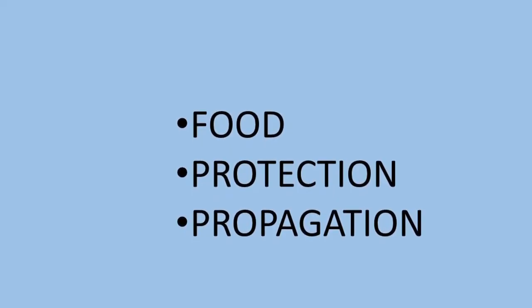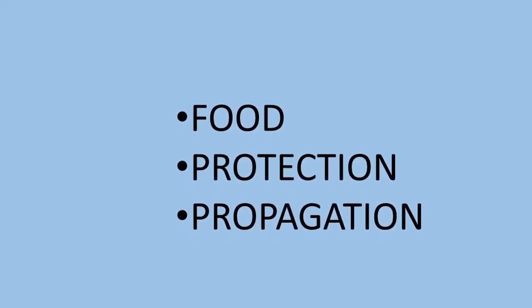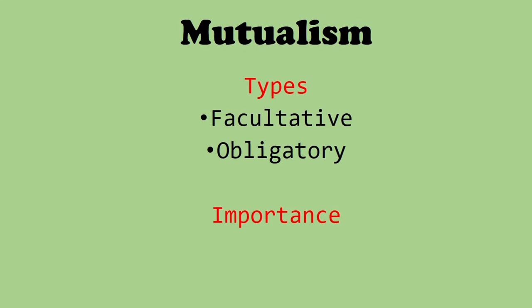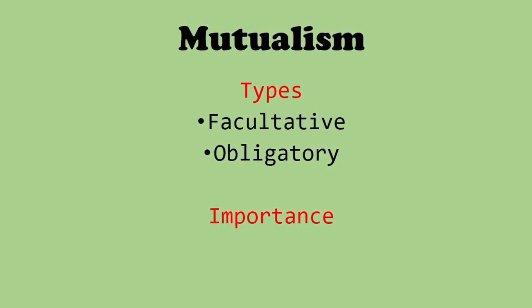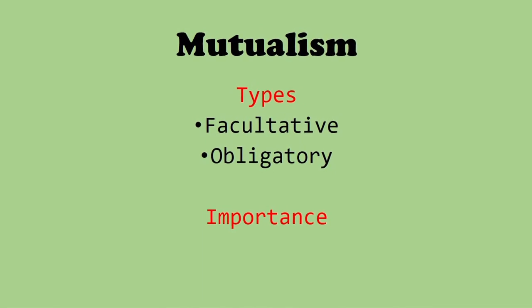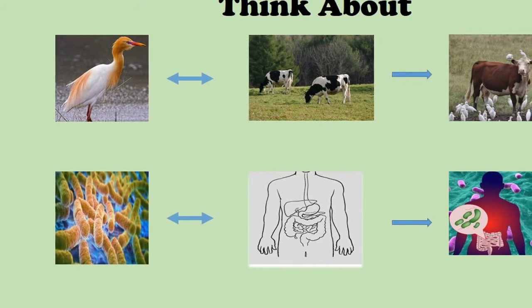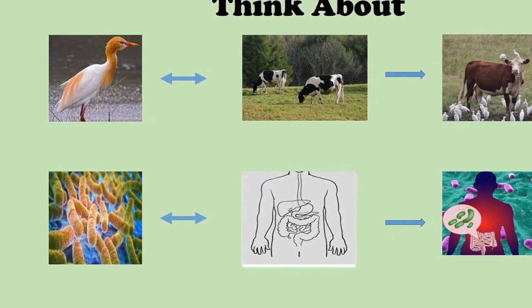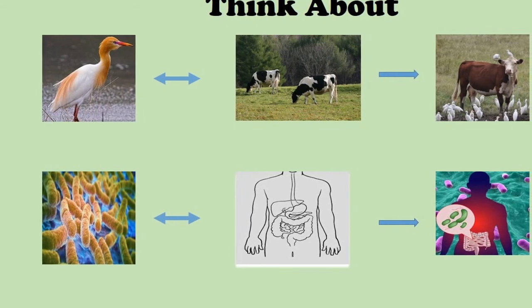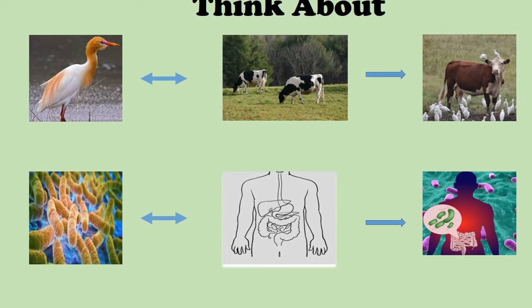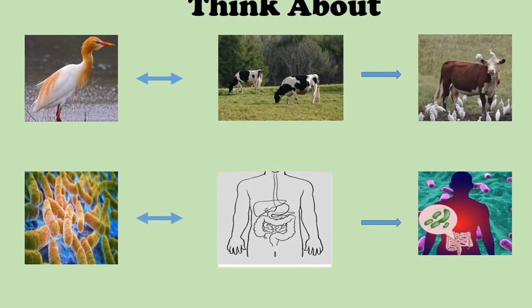Thus, these relationships are for food, protection, or propagation. It is a fact that the world functions and exists on such biotic interactions. To summarize, we learnt about mutualism, its types, and importance. Now, for the recall session: think of the relationship between egret and cattle, and between the bacteria found in our guts, and examine the relationships between them. Maybe we shall see about other types of ecological relationships in the next presentation. Thank you.